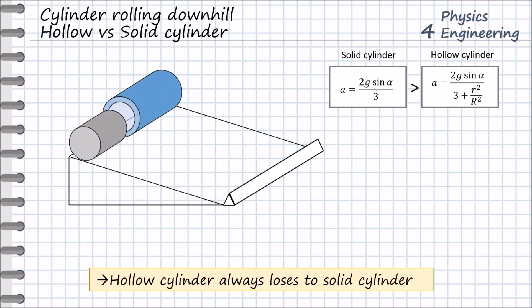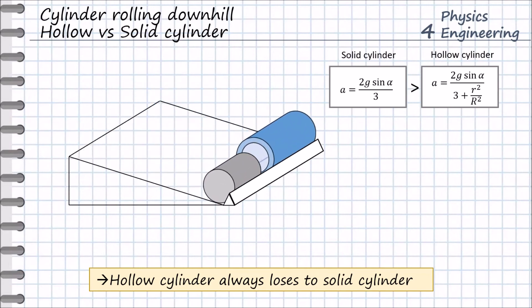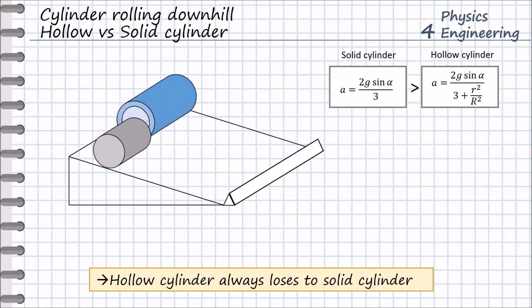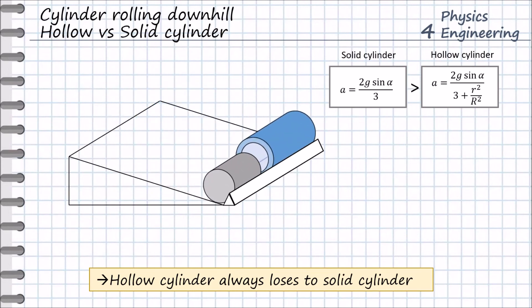Let us do one more test with different cylinders. The bigger cylinder, the blue one, is hollow — it has a hole inside — and the smaller cylinder, the gray one, is solid. If we let the cylinders roll, we see that the smaller cylinder arrived first, since it is solid, and the hollow cylinder arrived second. So the solid cylinder arrives first and the hollow is second.